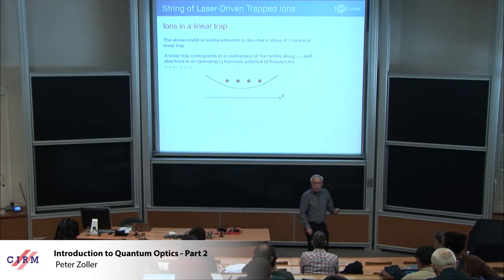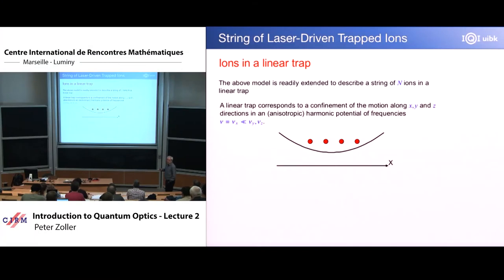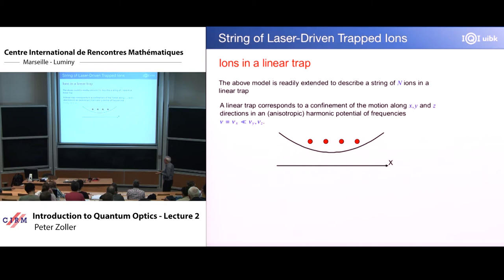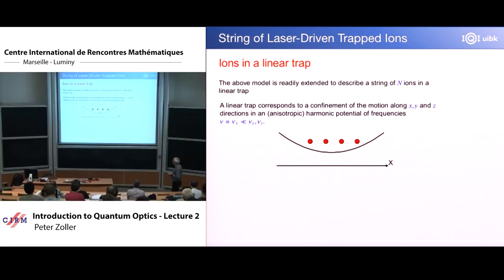So I hope that you are now ready to go from 1 to N to make this story also a little bit more useful. Let's take the same ideas and do models and think about ions in a linear trap. These things will form a string and they will form small oscillations around these equilibrium positions. We will quantize these oscillations to make essentially harmonic oscillators out of this.